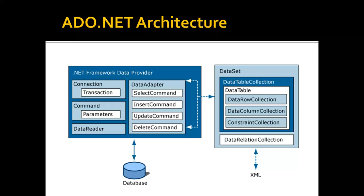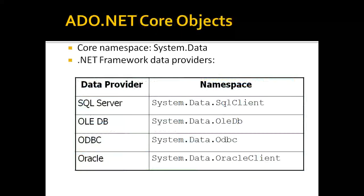Connected and disconnected architecture will be covered in a separate video where we can find the difference. ADO.NET core objects belong to a core namespace, because ADO.NET is a set of classes and interfaces — it is object-oriented. So we will have a specific namespace, which is called System.Data.